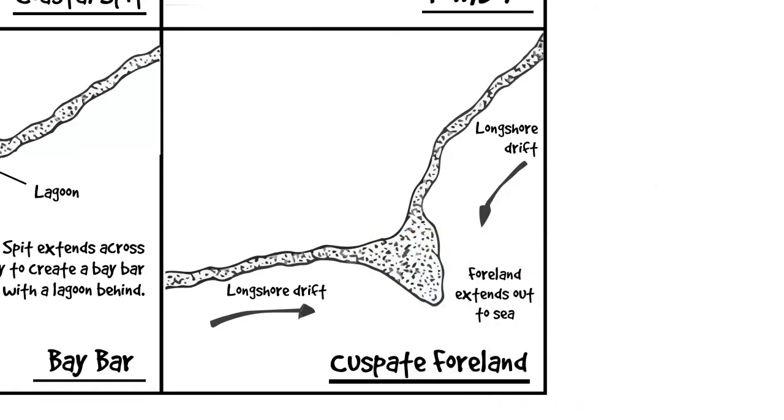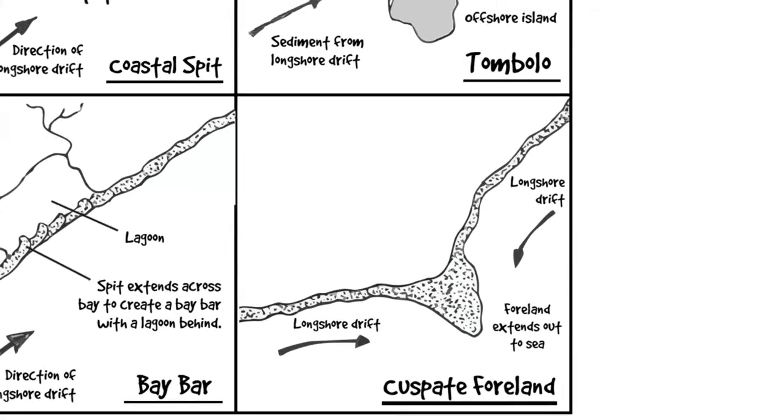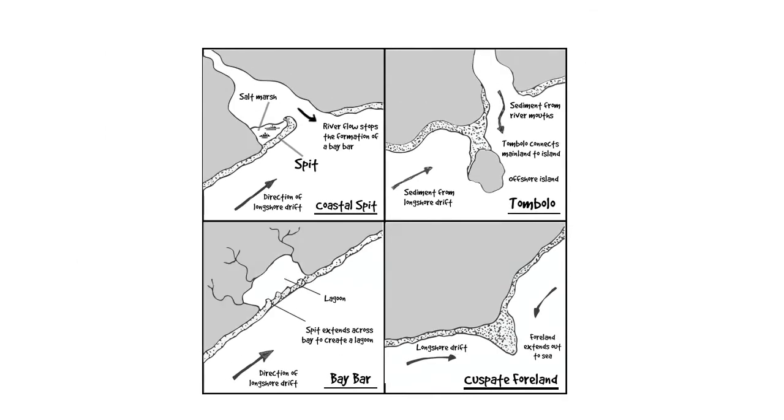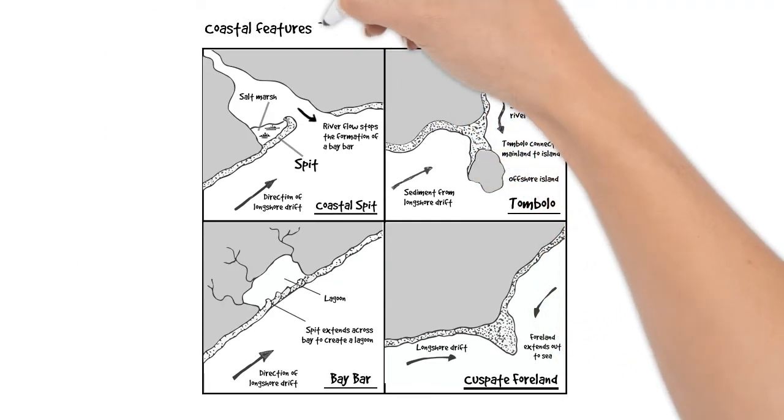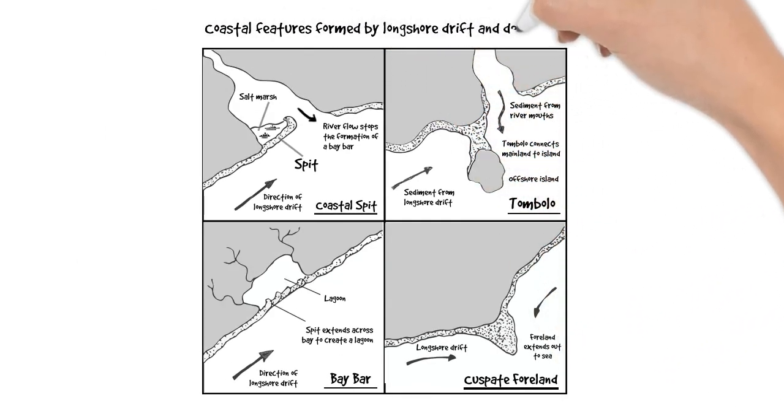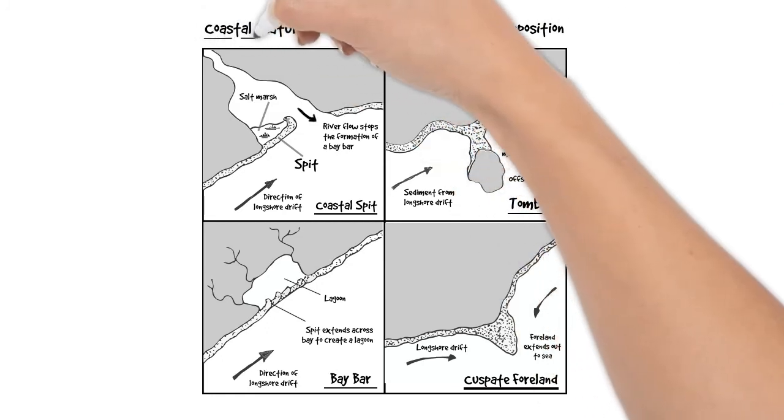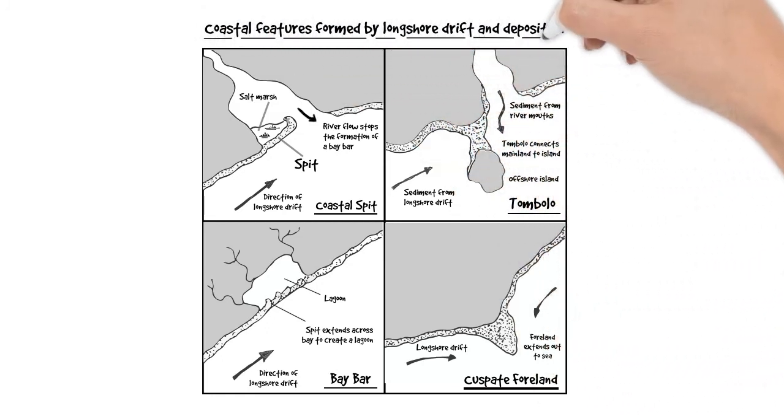So those are our four features of coastal deposition. We've got our spits, we've got our tombolos, a bay bar and a cuspate foreland. Give the whole diagram a title, underline it. And there we have spit, tombolo, bay bar, cuspate foreland. Features of deposition on a coastline.